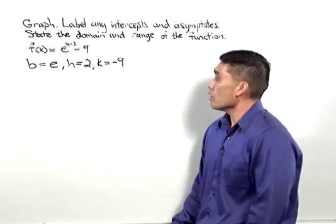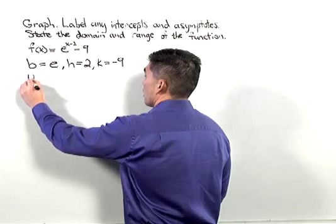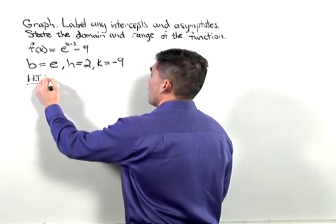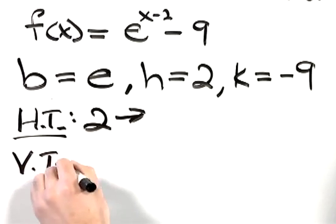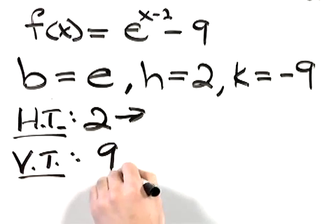So in this case, the horizontal translation is going to be 2 units to the right. The vertical translation is going to be 9 units down.